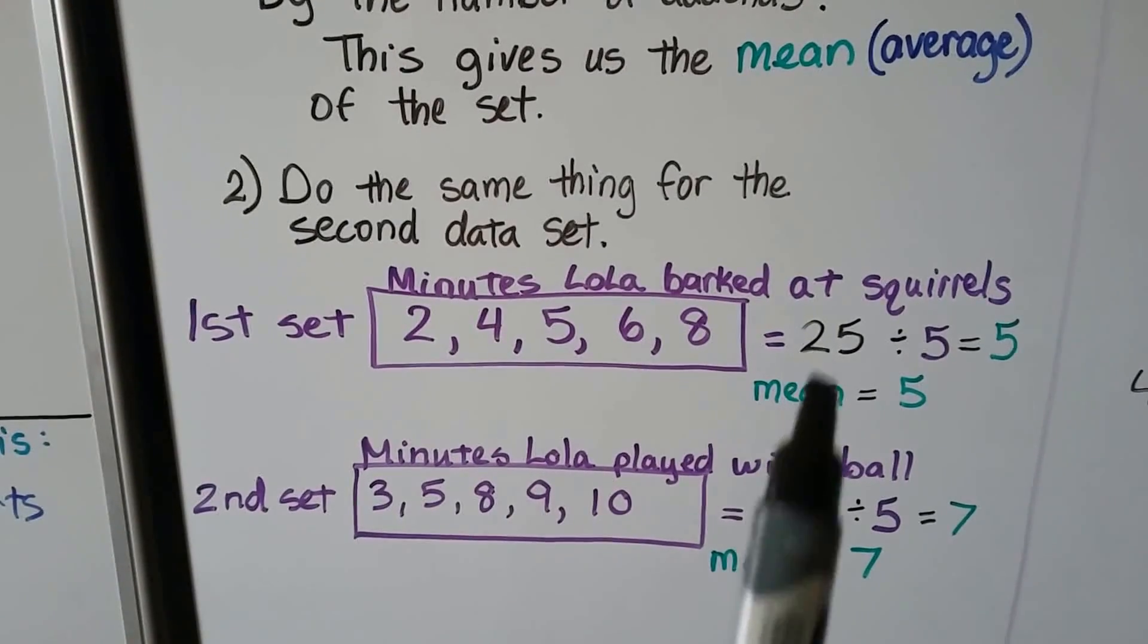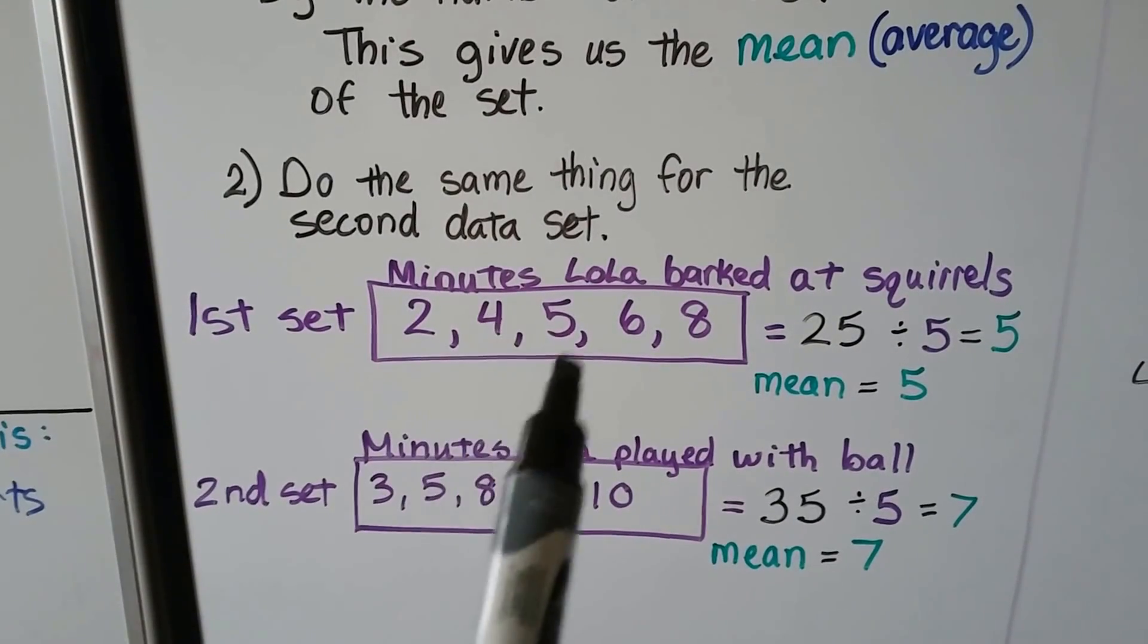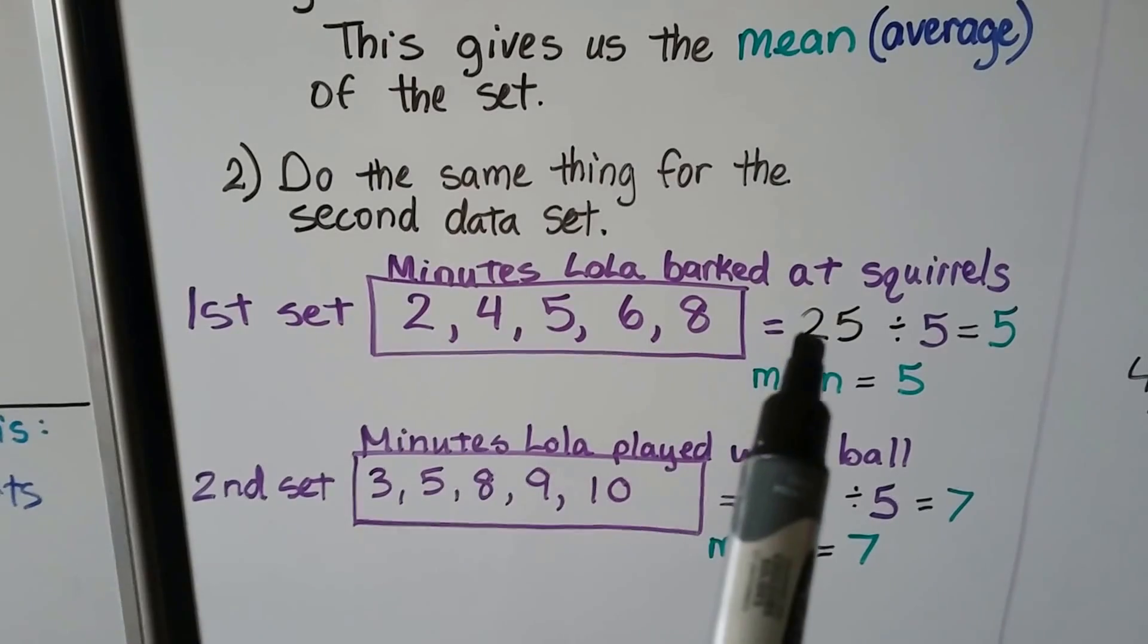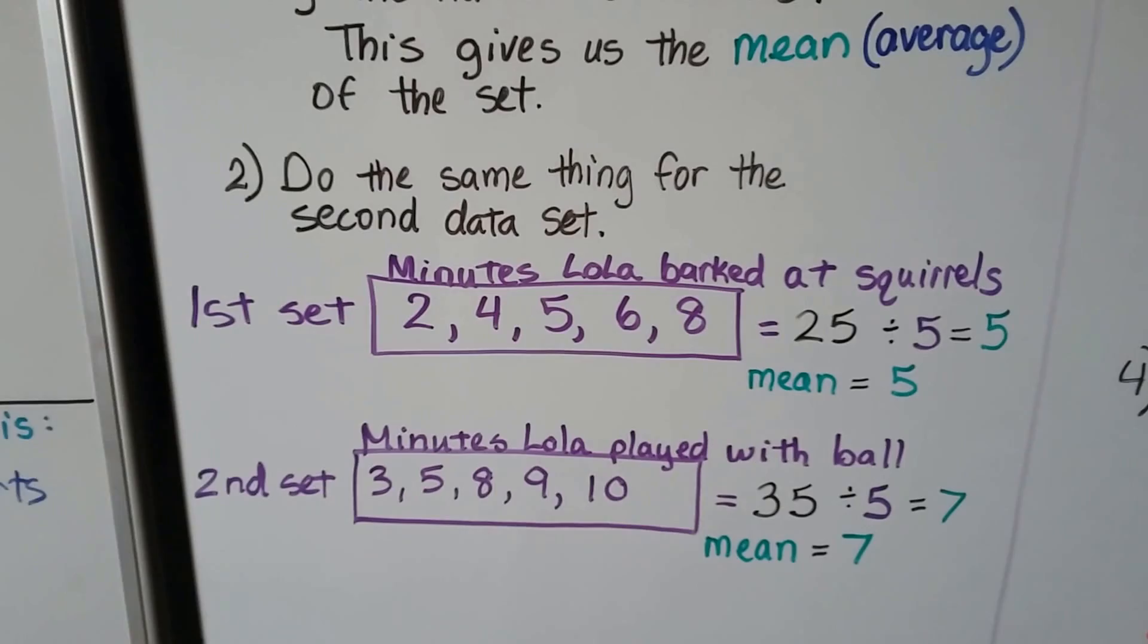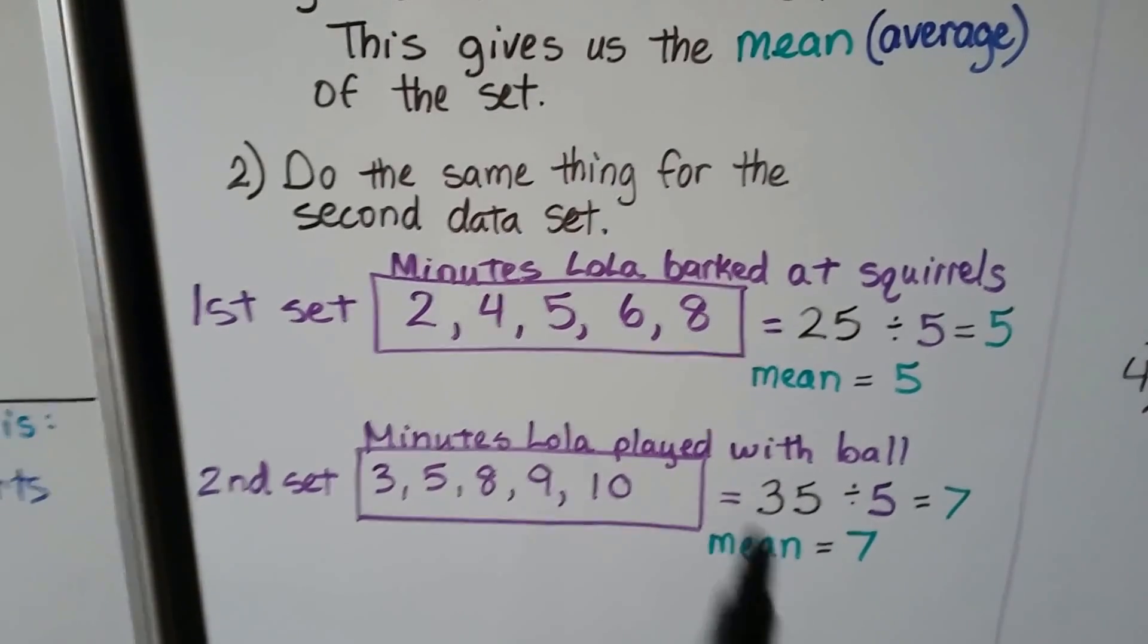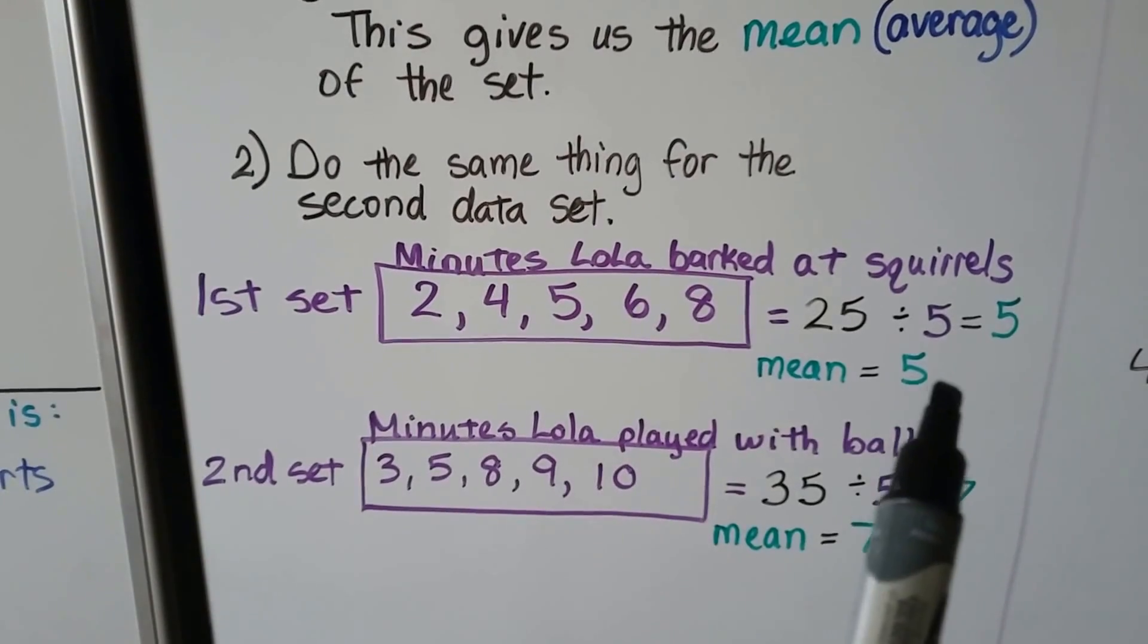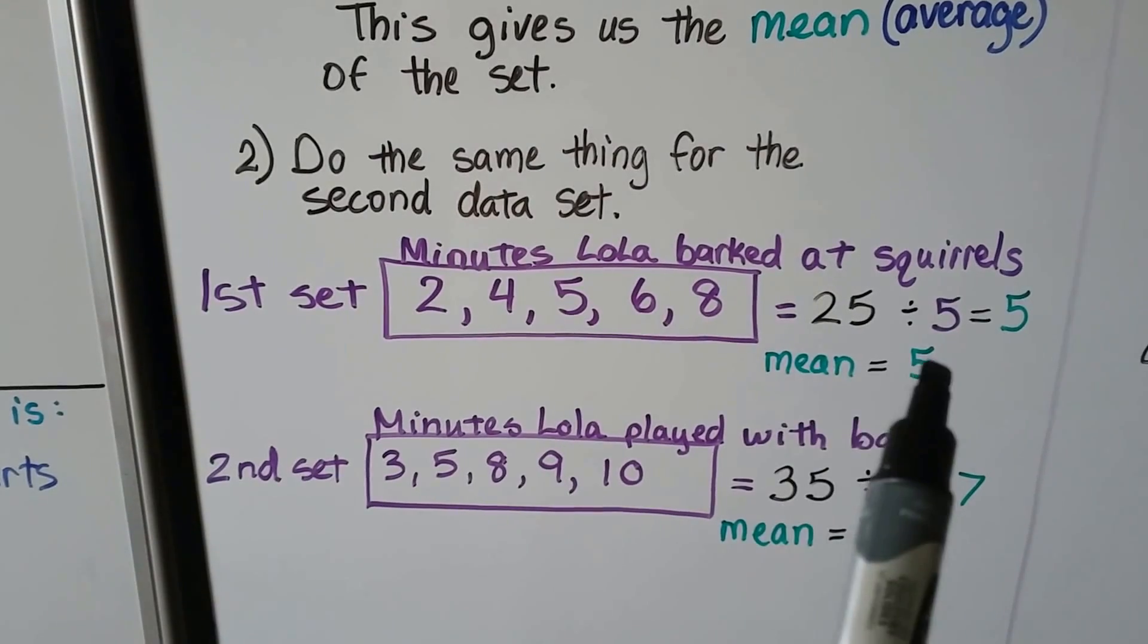I added the 2, 4, 5, 6, and 8, which equals 25. And because I have 5 addends, I divided the sum, 25, by the 5 addends, and I have an average of 5. So she barks at squirrels for an average of 5 minutes. The mean is 5.